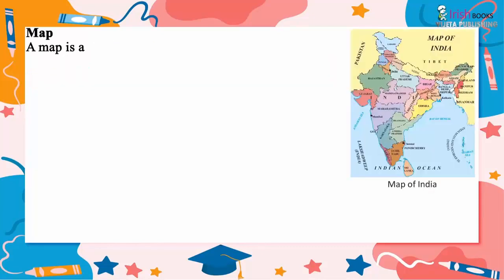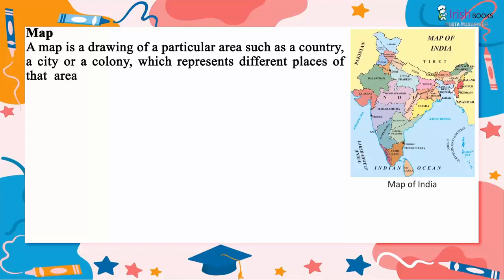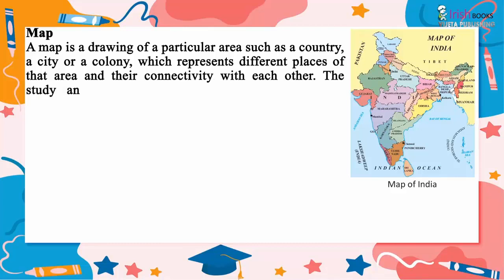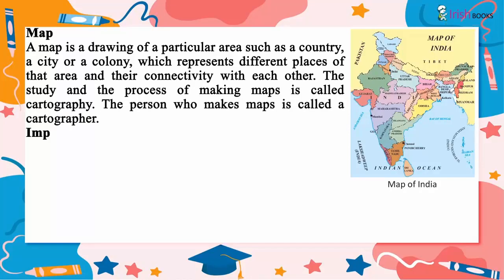A map is a drawing of a particular area such as a country, a city or a colony, which represents different places of that area and their connectivity with each other. The study and the process of making maps is called cartography. The person who makes maps is called a cartographer.